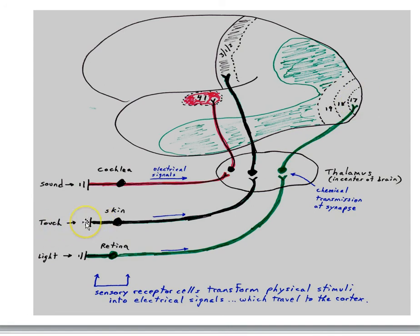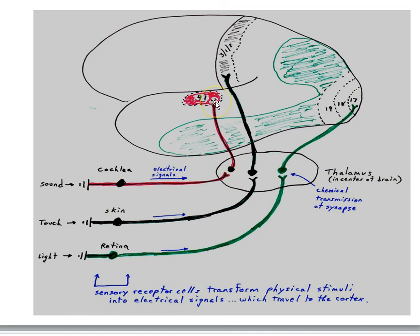For touch, we have sensory cells in our skin, and when they're stimulated, they send action potentials up to thalamus, from thalamus up to area 3-1-2, somatosensory cortex. And in our ear, the cochlear nerve is sending action potentials up to the thalamus, and from thalamus to area 41. So activity in these nerves is representing aspects of the world.